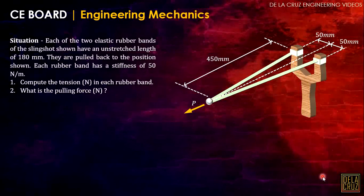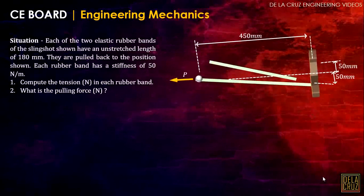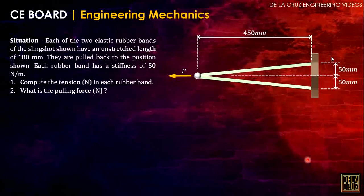So compute the tension in each rubber band and what is the pulling force in newtons, this P. This is the isometric view shown in the problem. Let's look at this at a plain view from the top for simplicity.